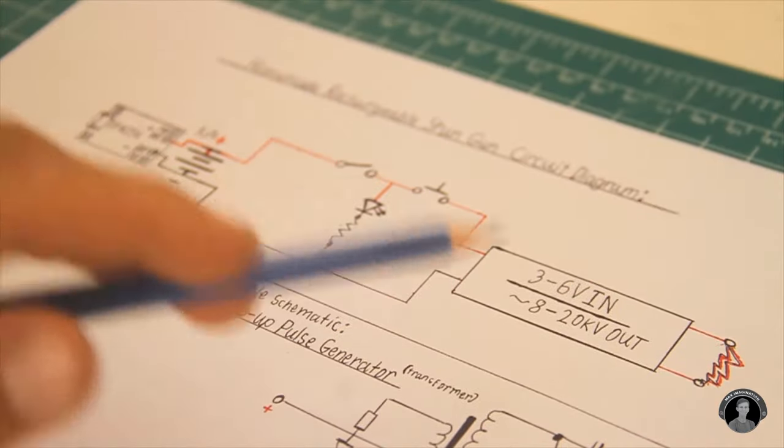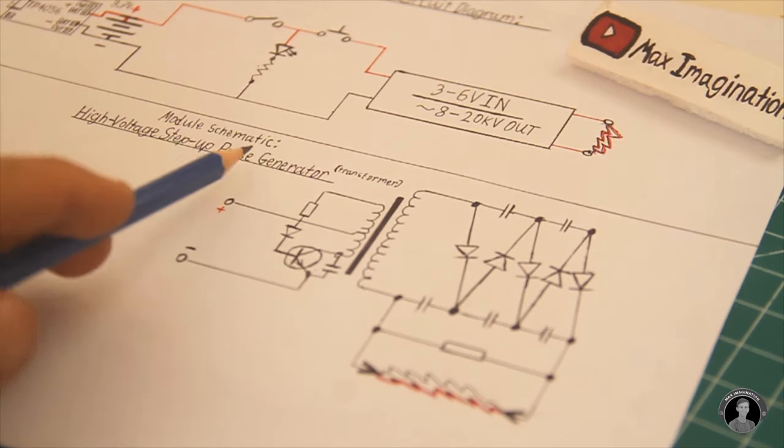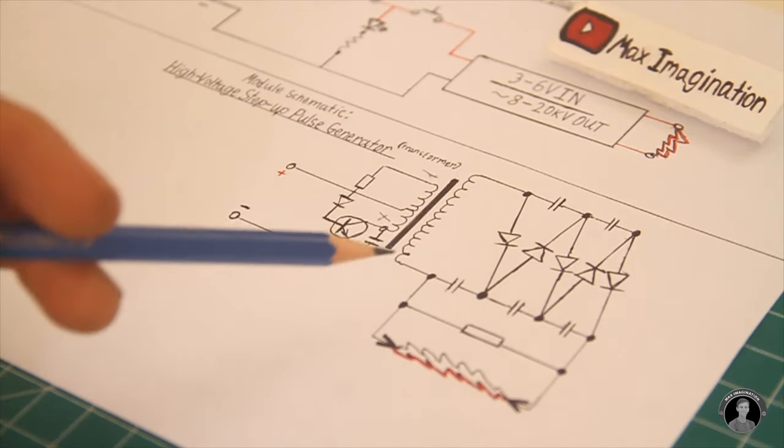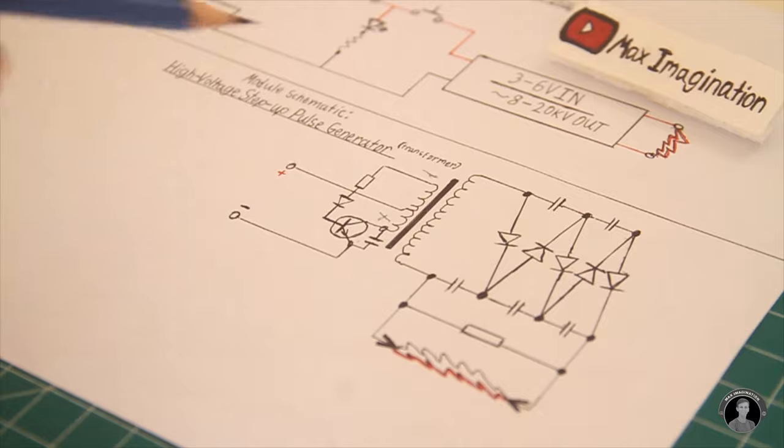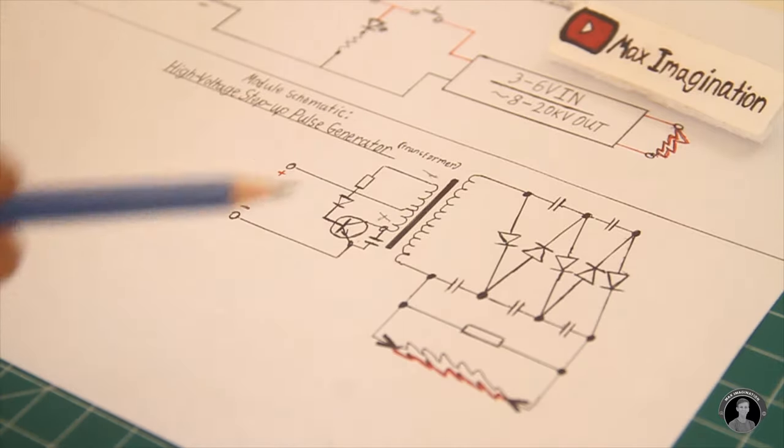Inside of this pulse generator module you have this circuit over here. So this is the approximate module schematic for the high voltage step up pulse generator transformer. I won't go into great detail about each component and how they work.